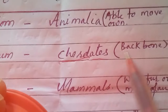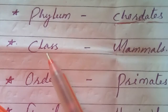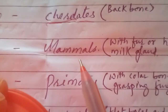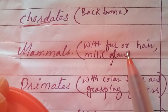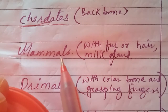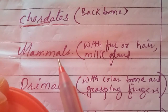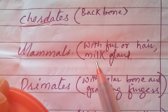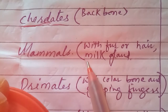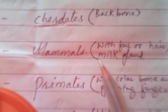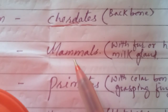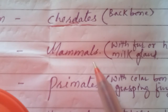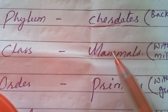Then comes the class. The class of the human being is Mammalia. Mammals are those chordates which have fur or hair on their skin. Most importantly, they have mammary glands in the region of their chest — a gland capable of producing a liquid called milk on which their babies get nourishment. This milk is secreted by the female mammary gland. Mammary glands are also present in the body of males, but in males they do not produce milk.